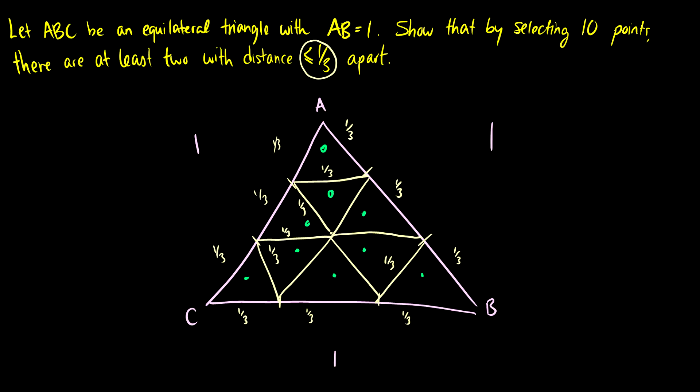So if we put a point in each triangle, then when we put that 10th point in, what's going to happen is we're going to end up with two points in the same triangle. And we know that the points at most in a triangle can be one third apart. So by putting that 10th point in, we know that the distance is going to be less than or equal to a third apart between two points.